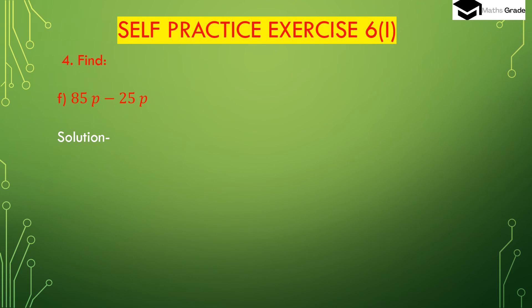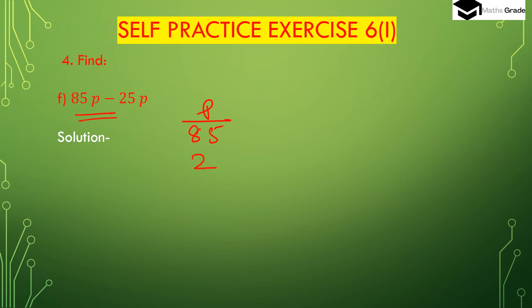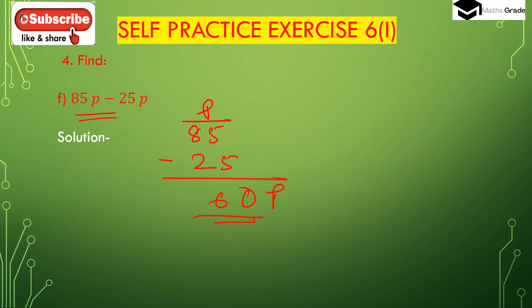Now question part (f): 85 paise minus 25 paise. There are no rupees, so 0 rupees — you only need to write the paise. 85 paise minus 25 paise equals 60 paise.